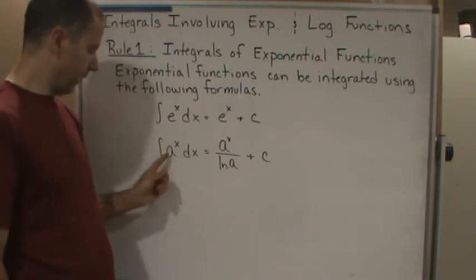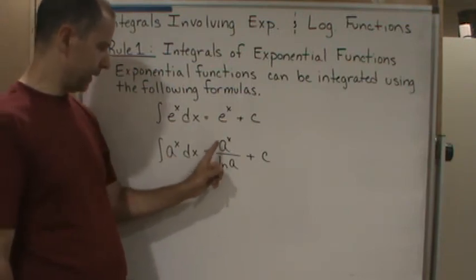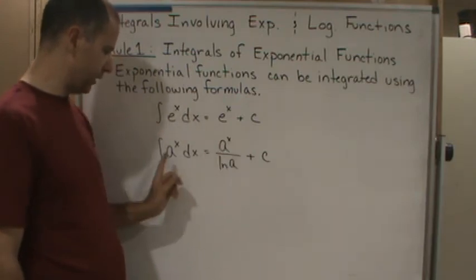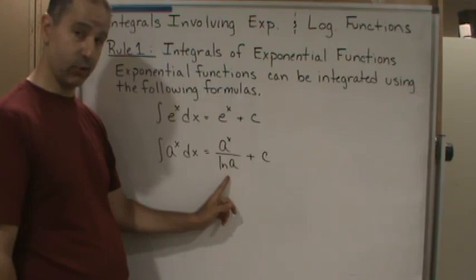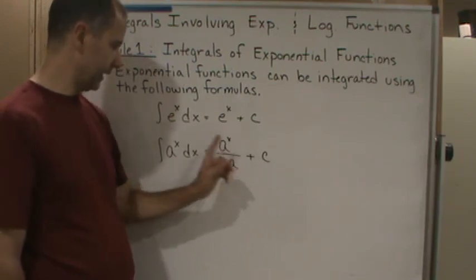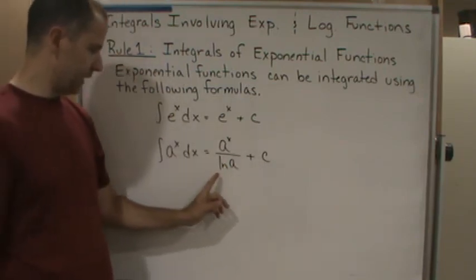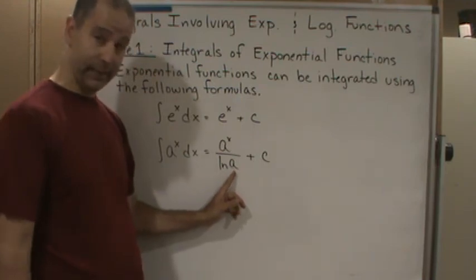So this is the general rule: a to the x dx is going to be equal to a to the x divided by the natural log of a plus c. Now this also works for e to the x because the natural log of e is one.